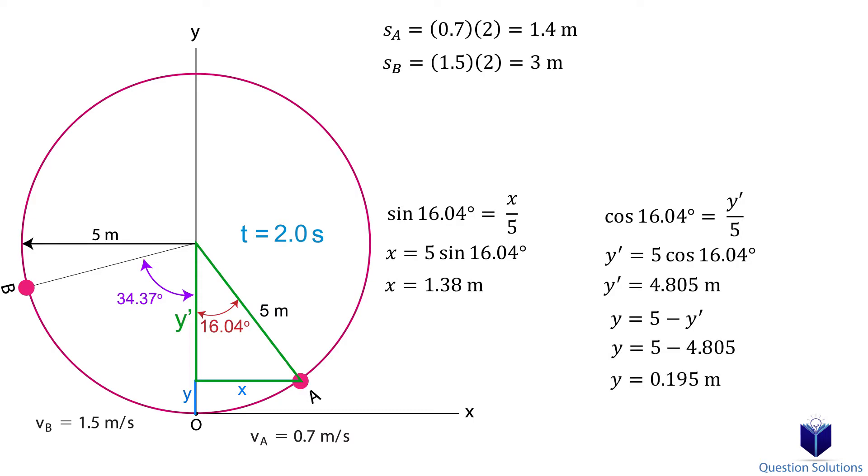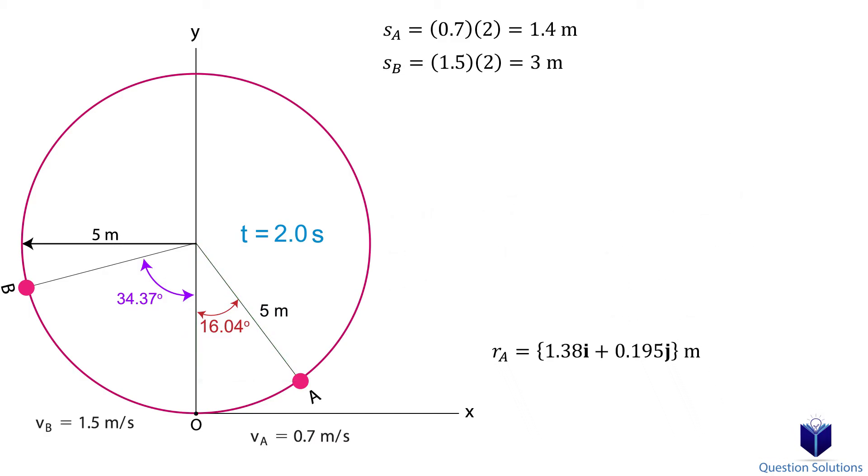Now we can write our position vector. We will do the same process for particle B. Remember that since these are position vectors, positive and negative signs are important. Since this particle is to the left, the x-axis component has to be negative, since right is positive. Y component will still be positive since the particle went up.